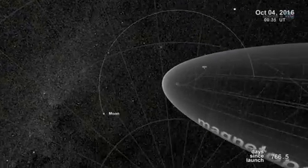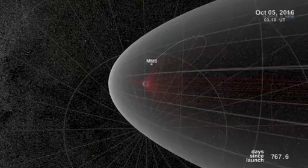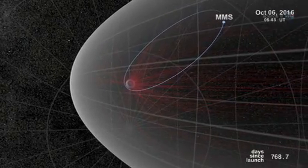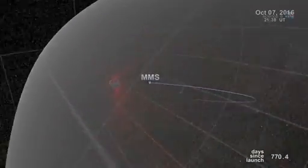Bristling with energetic particle detectors and magnetic sensors, the four spacecraft of MMS will spread out in Earth's magnetosphere and surround the portals to observe how they work.